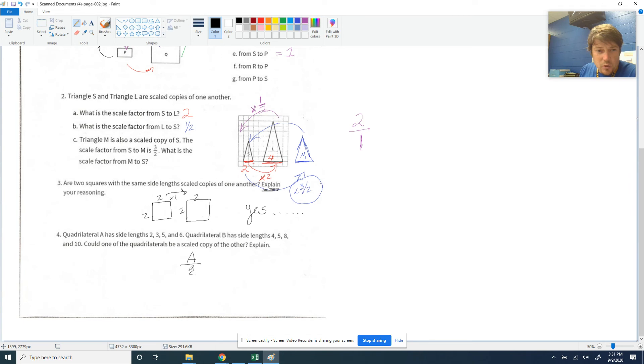For A, we have 2, 3, 5, and 6. And for B, the side lengths are 4, 5, 8, and 10. The question is, could these two quadrilaterals be scale copies of each other? Could they be a scale copy of the other? And the first thing you're going to look for is, all the sides have to have a common scale factor. So I'm going to look here. Times 2, right?